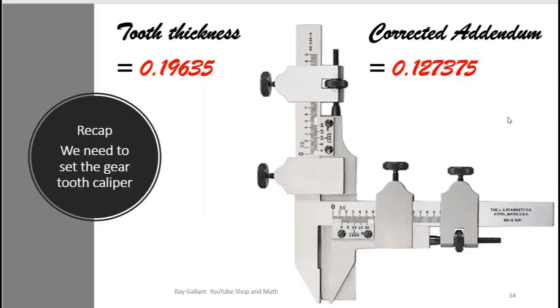Okay so in other words we're going to set the depth here to 1.27. Then we're going to measure across our gear tooth. Our gear tooth needs to be 1.96 in thickness to have the proper feel and fit.